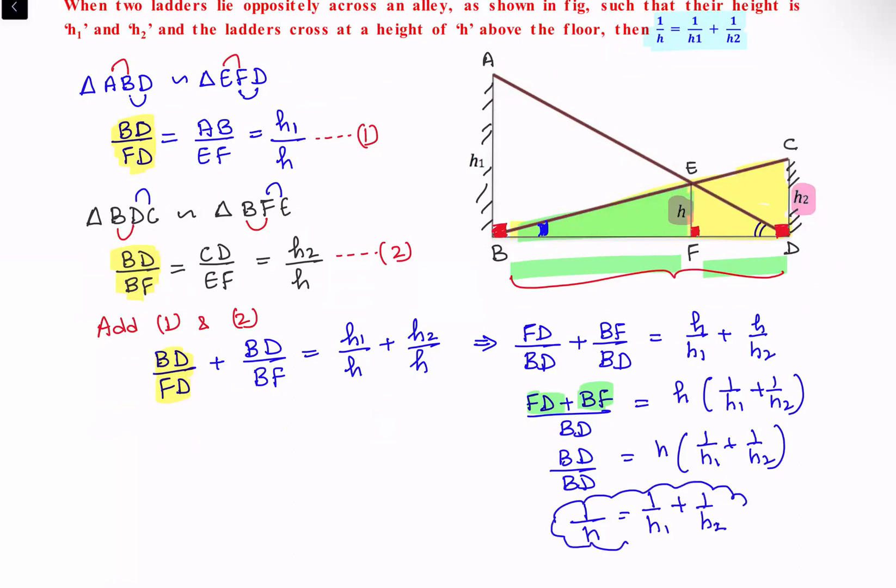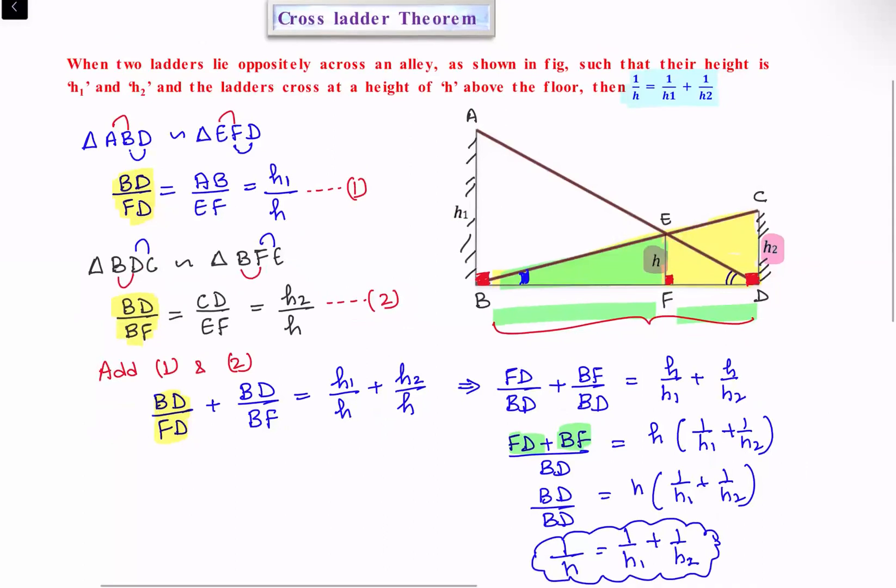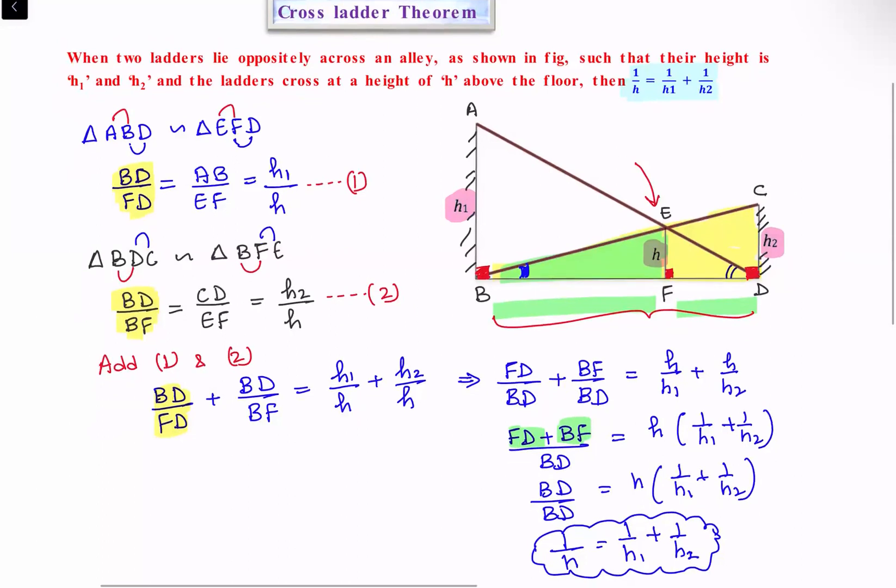So in the cross-ladder theorem, if we're only given the heights at which the ladders touch the buildings, we can find the height at which they cross each other. I hope you enjoyed the solution. I'll see you in the next video. Bye bye!